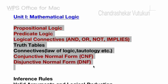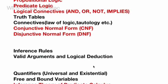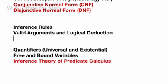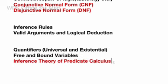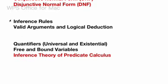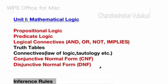There may be a mix-up of 3AB also sometimes. Inference rules and logic deduction are set as the topmost short question this time. Quantifiers as well as inference theory of predicate calculus is set as a topmost question which may occur in 3AB as well as 2A, dear students. This is all about Unit 1.